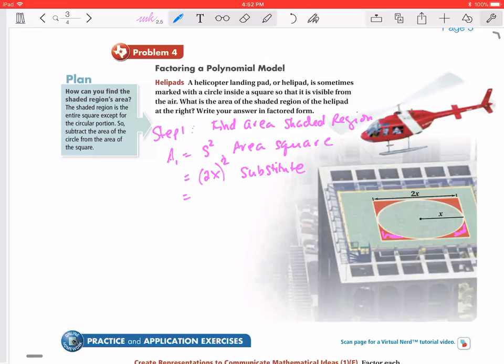Now I'm going to simplify this. So I'm going to distribute that power to both terms inside my parentheses, so that's going to become 4X squared. We simplified.